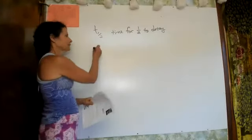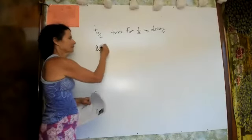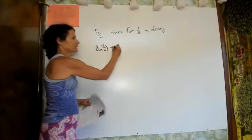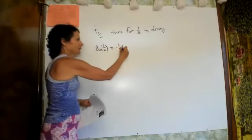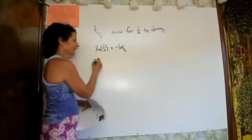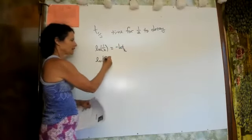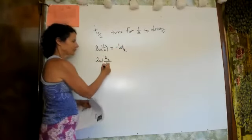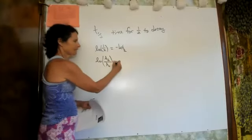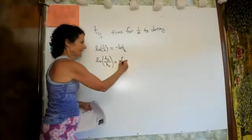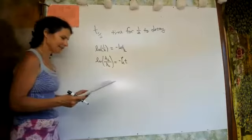The formulas: natural log of one-half equals negative K times T-half, and natural log of A-final over A-initial equals negative K times whatever time you're trying to find.